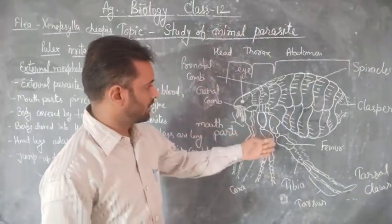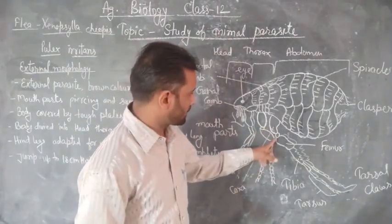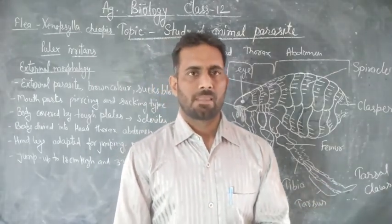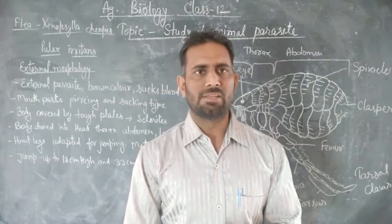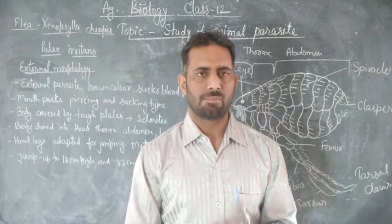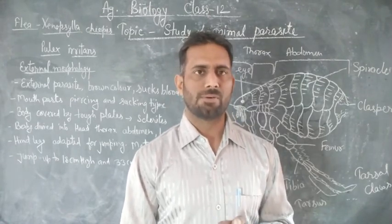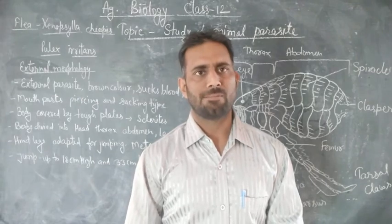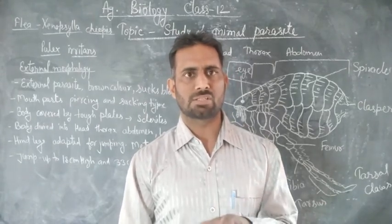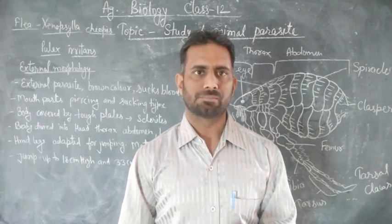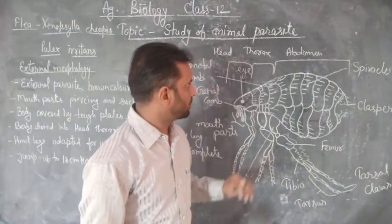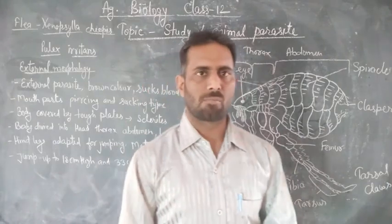Its legs are divided into five parts: coxa, trochanter, femur, tibia, and tarsus. Male and female fleas cannot reproduce in the absence of blood. Blood is the food of fleas as they are sanguivorous animals — they survive only on blood and cannot reproduce without it.